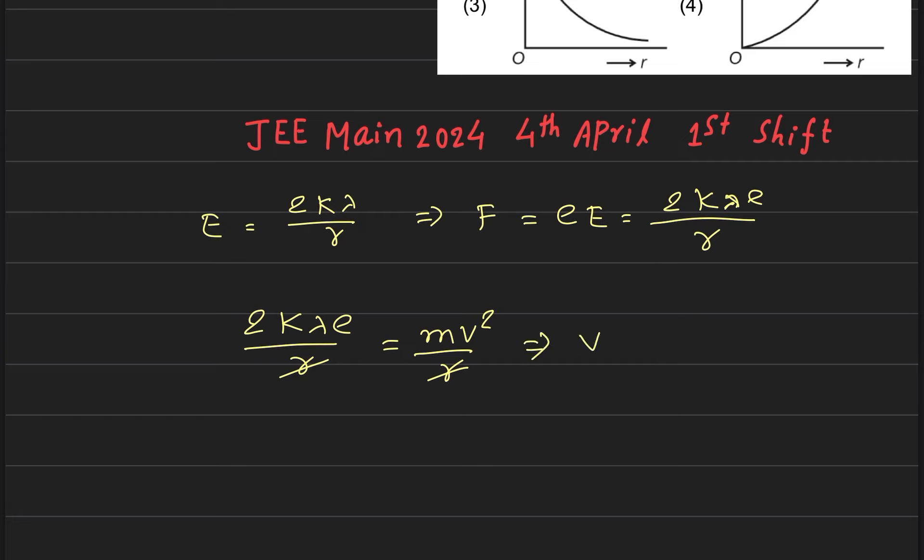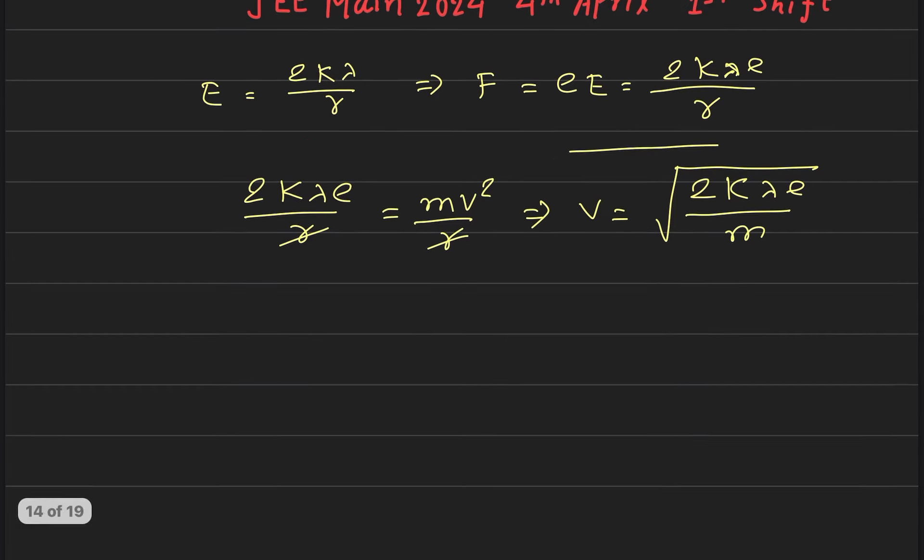So v is equal to root over 2k lambda e by m. So velocity. Then we cancel the speed. This is also the formula. The other thing is the kinetic energy.